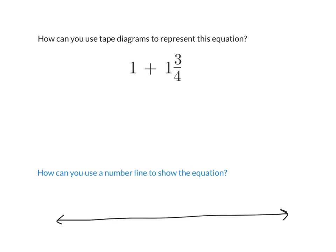How can I draw a tape diagram to represent this equation? Go ahead and write the equation 1 plus 1 and 3 fourths in your notebook, and then draw a tape diagram. Your tape diagram might look something like this. Here's 1, here's 1, here's 1 more, and here's something shorter called 3 fourths. Do you guys see here? We have 1 plus 1 and 3 fourths.